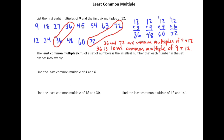I'm going to present a few different strategies for finding the least common multiple of two numbers. First of all, if you just recognize what the least common multiple is, that's fine — you don't have to show any work. So looking at two numbers like 4 and 6, you might automatically say to yourself: 12 is the smallest number that both 4 and 6 divide into evenly, and if you recognize that right off the bat, that's fine.